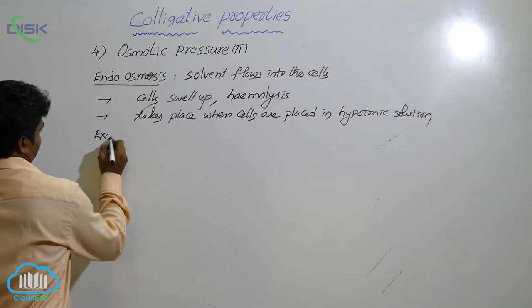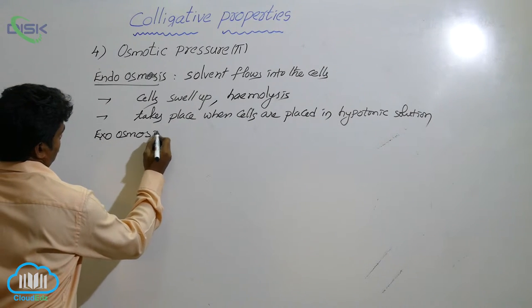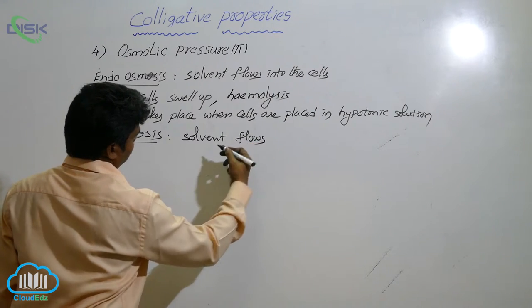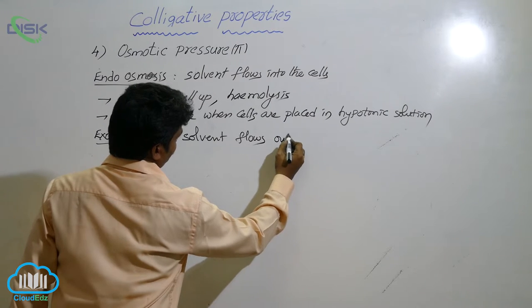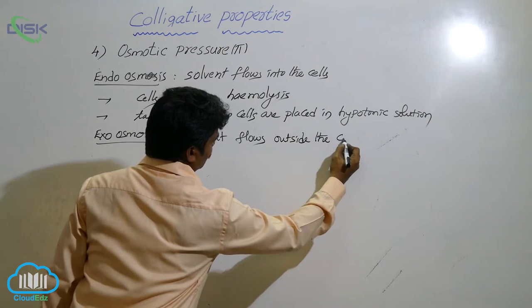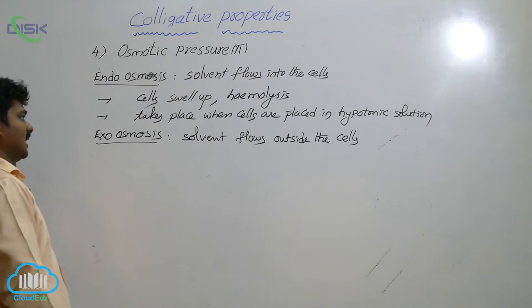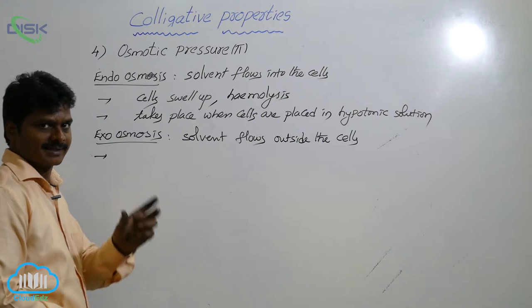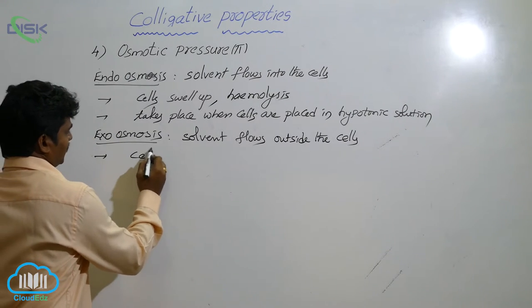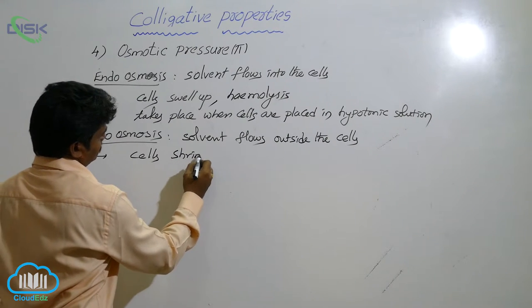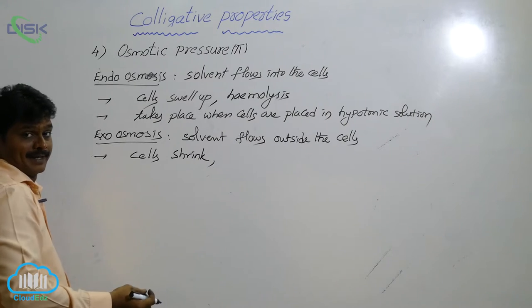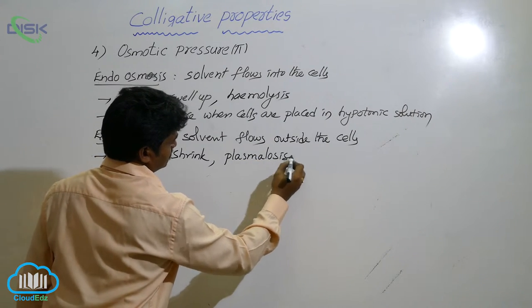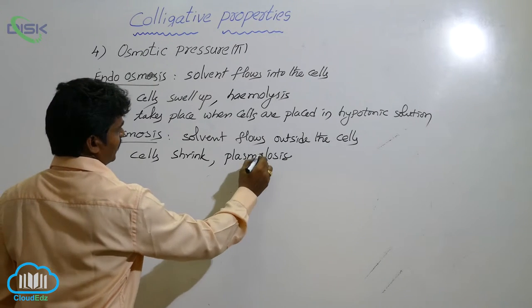In exosmosis, solvent flows outside the cells. Because of this outward solvent movement, the cell simply shrinks. The shrinkage of cells is called plasmolysis. Exosmosis takes place when cells are placed in a hypertonic solution — one with high osmotic pressure, meaning high concentration.